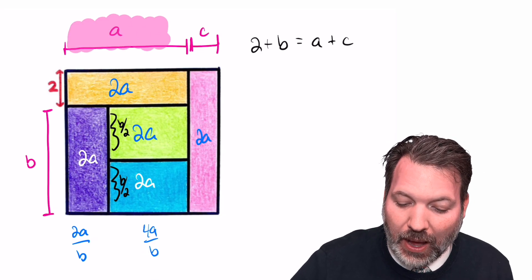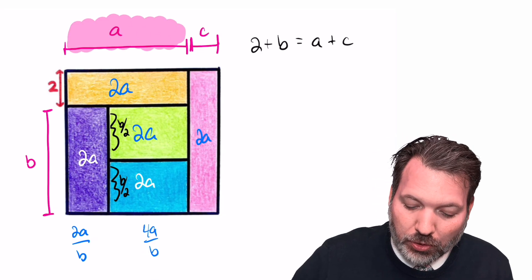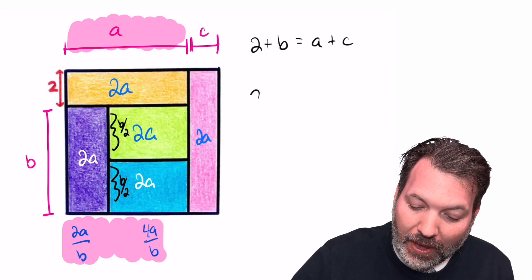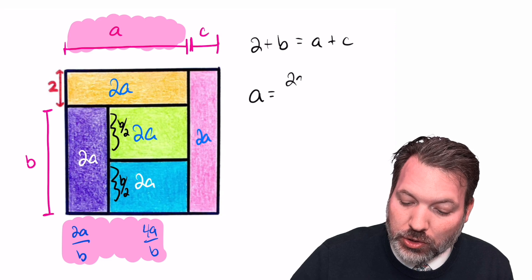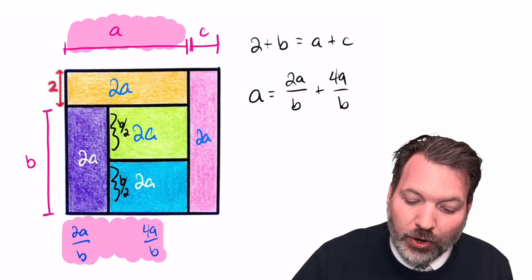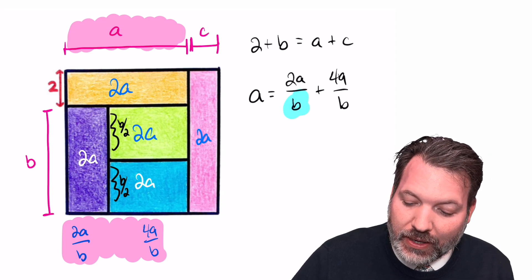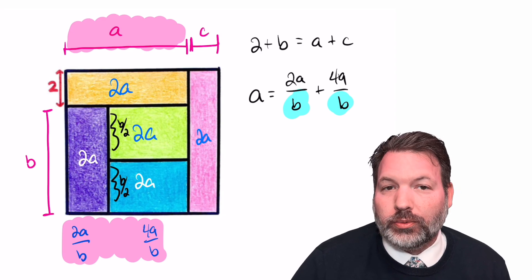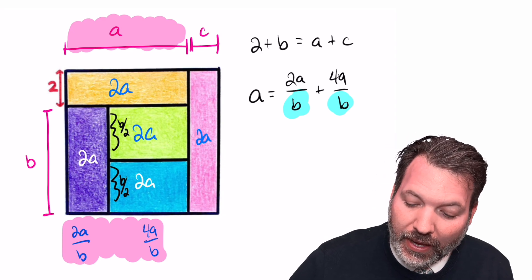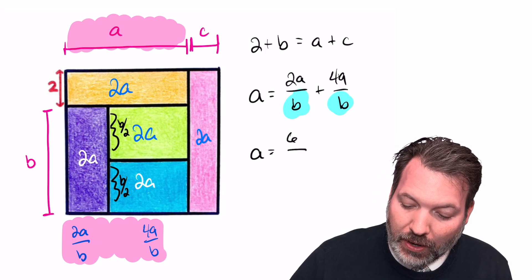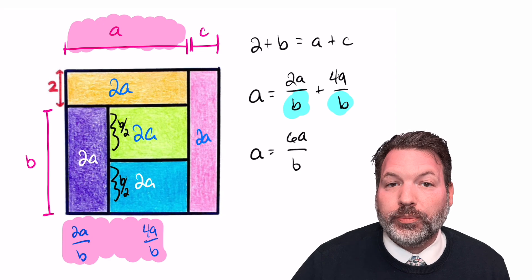Once we know this, we want to look back up at the top of this square. That total length is a, and so this gives us a relationship. A must be equal to the sum of 2a over b and 4a over b. And although we don't know what b is, it's already the same across these two fractions. It's already a common denominator for us. And so we can say that a must be the sum here, 2a plus 4a makes 6a over b.